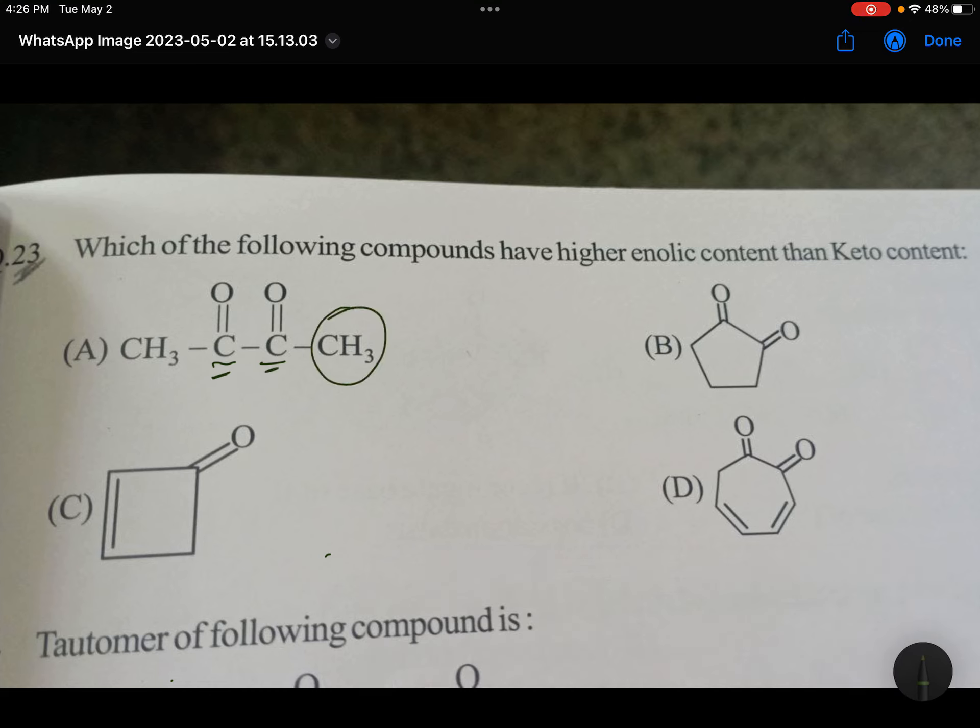This is the ketone. Here alpha hydrogens are there, so definitely it can show the enol content. This will become OH and double bond CH2. For this enol content to be more, that must be generally aromatic. If it becomes aromatic, then enolic content will be more.